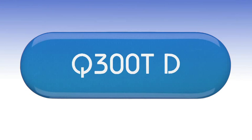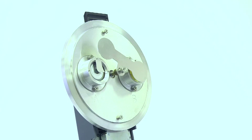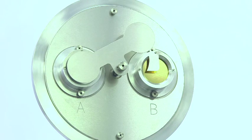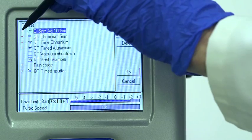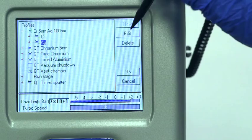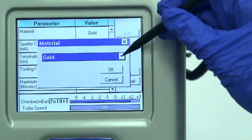The Q300TD completes the current Q-series range. Typically used for wafer coating and other thin film applications, it is a unique twin-target sputter coater for sequential coating of two different materials in a single cycle.